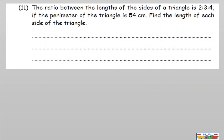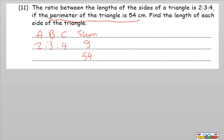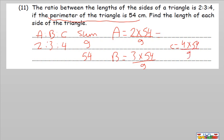Question number eleven: the ratio between the lengths of the sides of a triangle is 2 to 3 to 4. The perimeter of a triangle is the sum of all sides — which means they give us the sum. 2 plus 3 plus 4 equals 9; under it is 54. Find the length of each: A equals 2 by 54 divided by 9, B equals 3 by 54 divided by 9, C equals 4 by 54 divided by 9. 54 divided by 9 equals 6: 6 by 2 equals 12, 6 by 3 equals 18, 6 by 4 equals 24.